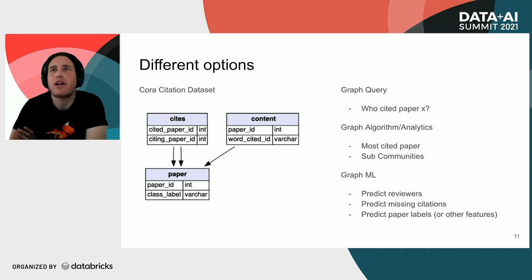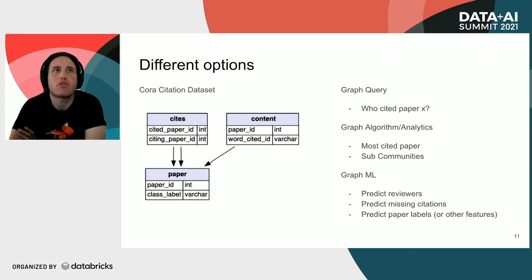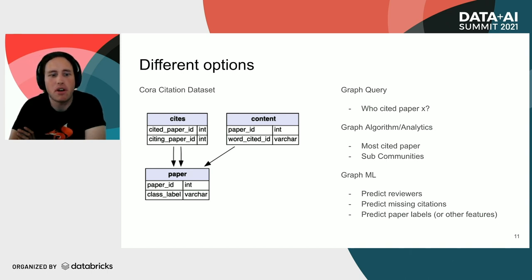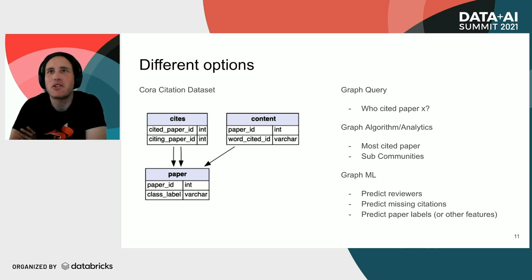The challenge in this field is that we often have different options for even similar queries. To make it concrete, let's take a very common dataset: the CORA citation network. It's basically a network of papers citing each other. An easy graph query would be: who cited paper X? — because it's basically looking up the direct neighborhood of a node in that graph. Then from a graph analytics perspective: what are the most cited papers, and what are the common sub-communities? Papers are cited differently — probably I will cite more people in the same field, and often people in my direct neighborhood, such as being at the same university.